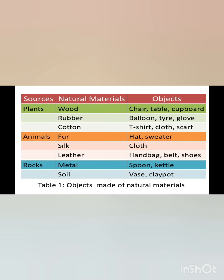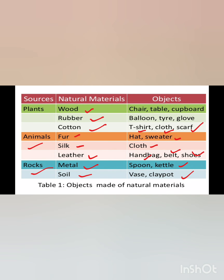Here is a summary of natural materials: from wood we make chairs, tables, and cupboards. From rubber we make balloons, tires, and gloves. Cotton is also a plant — we make t-shirts, clothes, and scarves from it. From animals we get fur, silk, and leather — from fur we make hats and sweaters, from silk we make clothes, and from leather we make shoes, belts, and handbags. From rocks we get metal and soil — from metal we make spoons and cars, and from soil we make clay pots and bricks.